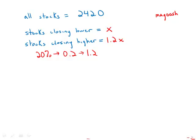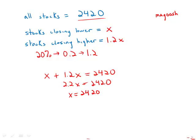So notice that all stocks changing price is 2420. So that includes both the stocks that went higher and the stocks that went lower. So X plus 1.2X, stocks that went higher plus stocks that went lower, is 2420. So 2.2X equals 2420. X equals 2420 divided by 2.2. So the first thing I'm going to do is just divide the top and bottom by 2, so I get 1210 over 1.1.